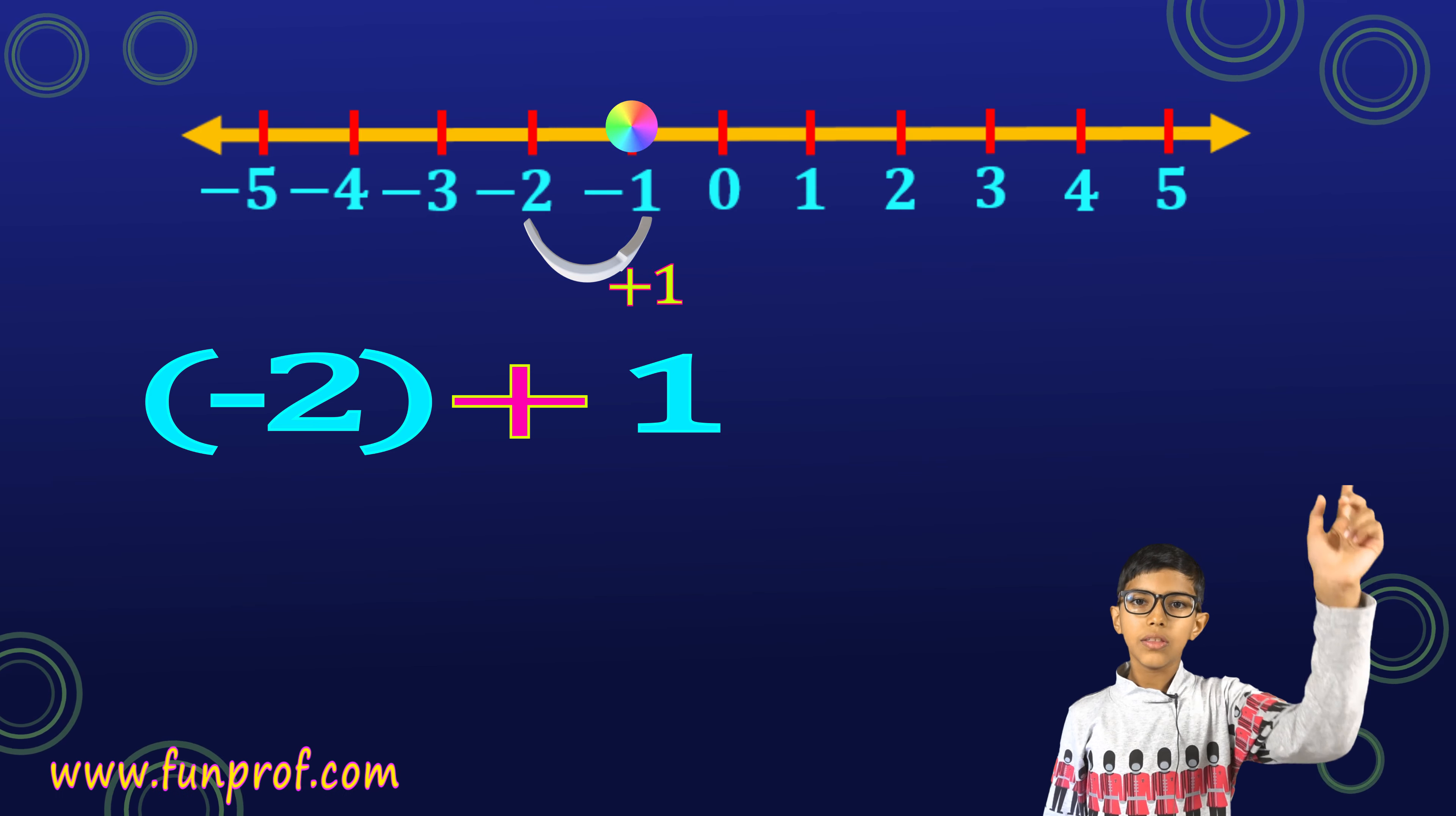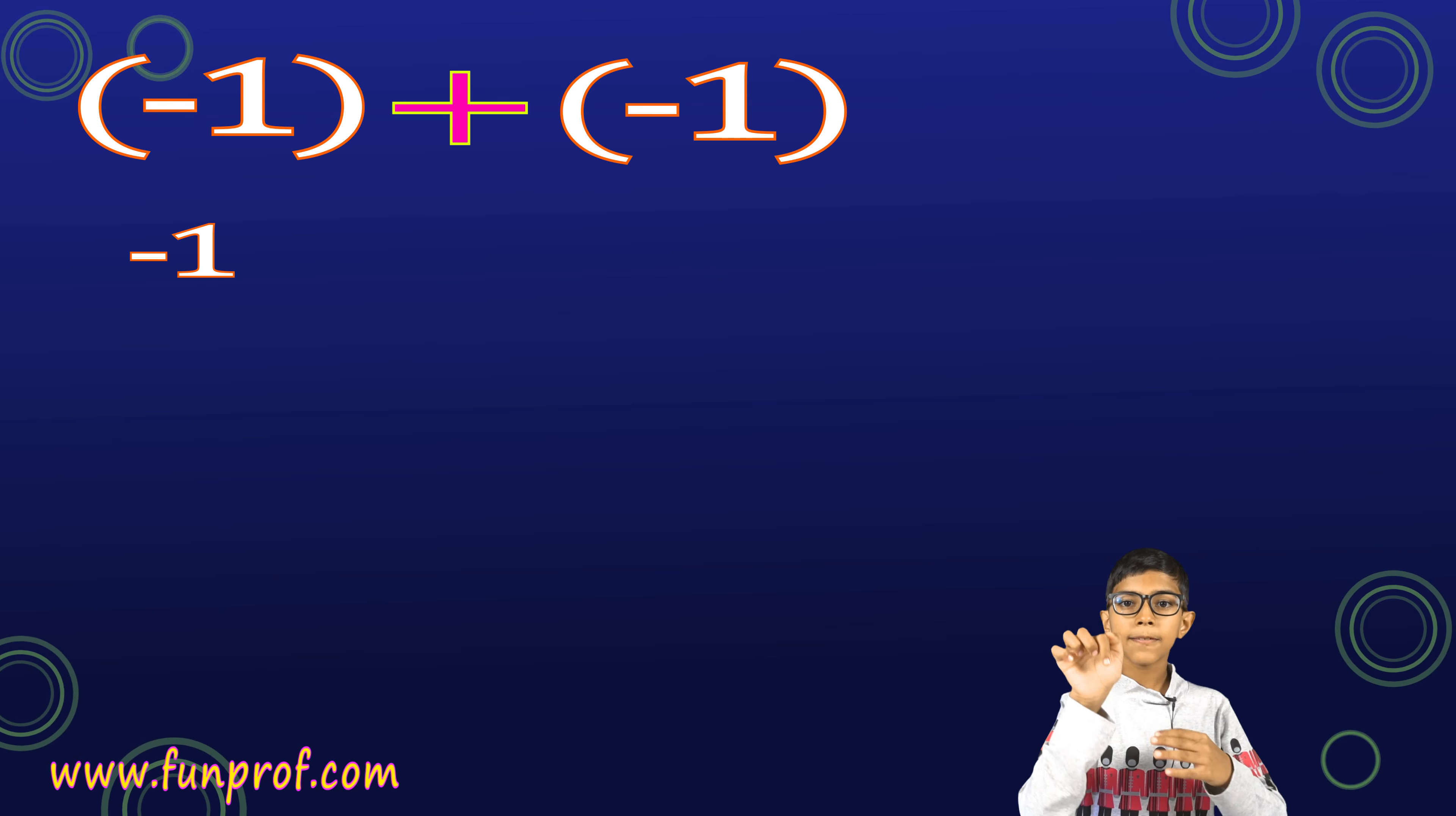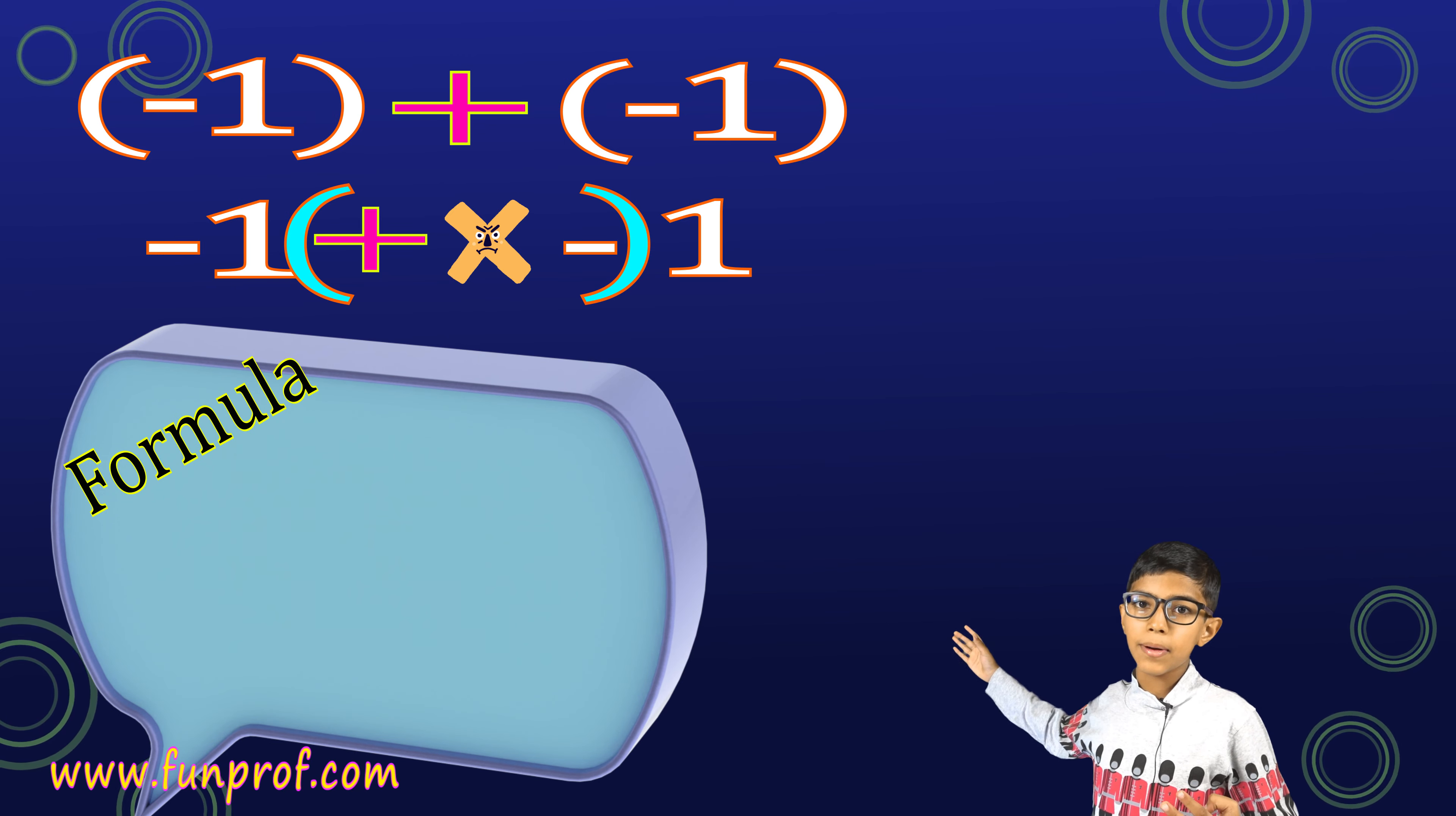Next is minus 2 plus 1. We are on minus 2 and we take one step to the right. Now, we get minus 1. Was this simple? Now, we have some confusing concept. Minus 1 plus minus 1. Both the numbers are minus. So, when we open the bracket, we get minus 1 plus into minus 1.